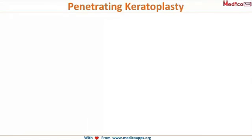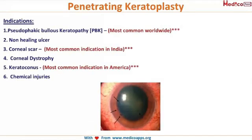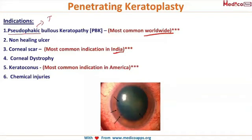What are the indications for penetrating keratoplasty? The first is pseudophakic bullous keratopathy. Note: if a question asks for the most common indication worldwide, the answer is pseudophakic bullous keratopathy. The word looks big and confusing, but it's simple. 'Pseudophakic' means the patient has an IOL — an intraocular lens — they've undergone cataract surgery. 'Bullous' means there are bullae present.